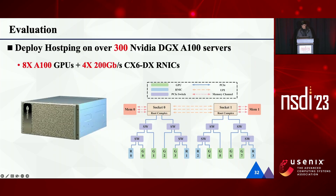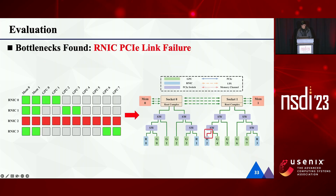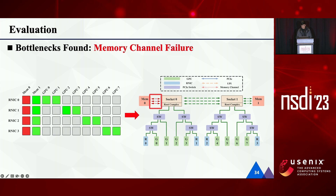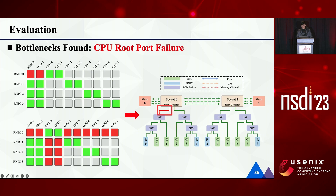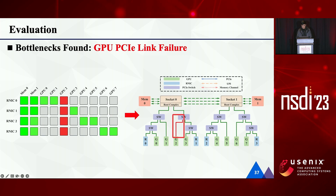We have deployed HostPing on over 300 A100 servers. The server topology is shown in the right figure. I will introduce some bottlenecks found by HostPing during the deployment. First, RNIC PCIe link failure: we can see that the bandwidth from RNIC2 to all endpoints degrades. Next, memory channel failure: the bandwidth from all R-NICs to memory node zero degrades. Then, UPI failure: all cross-socket traffic suffers from degraded bandwidth. Next, CPU root port failure: both figures on the left show CPU root port failure, except the upper case has slight bandwidth degradation, so no anomaly is found for endpoints not affiliated with RNIC zero. Then, GPU PCIe link failure: the bandwidth from all R-NICs to GPU2 degrades.